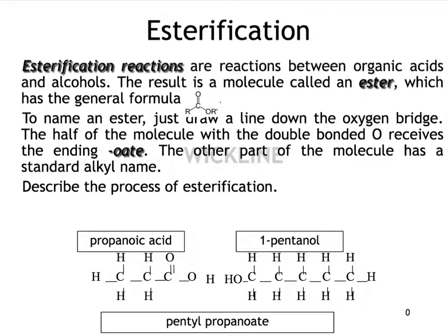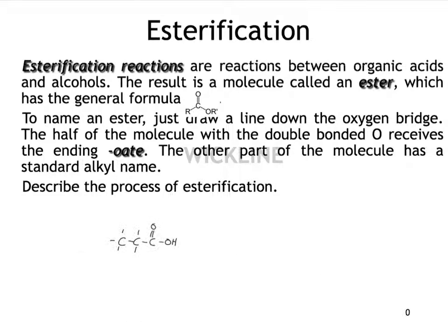To name an ester, we just draw a line down the oxygen bridge and the half of the molecule with a double bonded oxygen receives the ending oate. The other part of the molecule has a standard alkyl name. So I just sort of blanked out all the craziness at the bottom because it works best as an animation and you can't see that here.